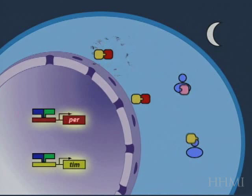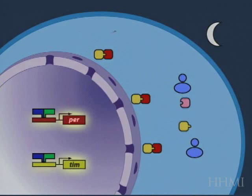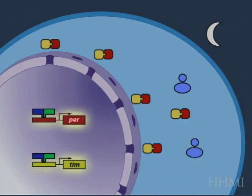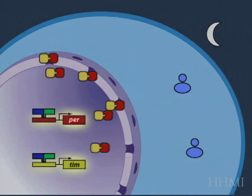And you'll notice that the pink protein disappears, but when the pink protein interacts with the timeless protein, then a stable heterodimer is formed. So, the distinction between the pink per-protein, which gets degraded, and the red per-protein, which is stabilized, is an interaction with timeless.